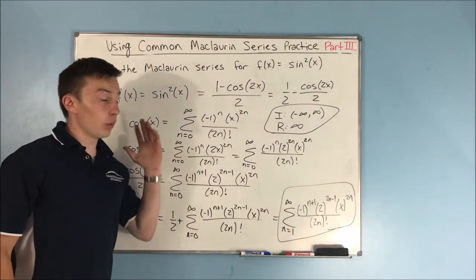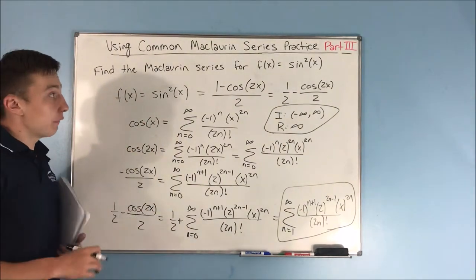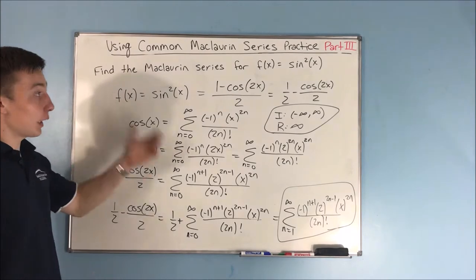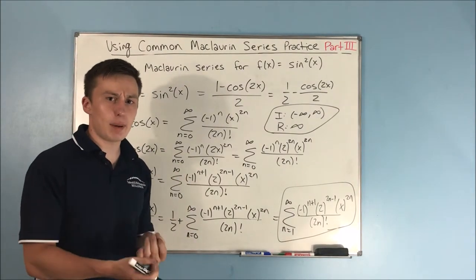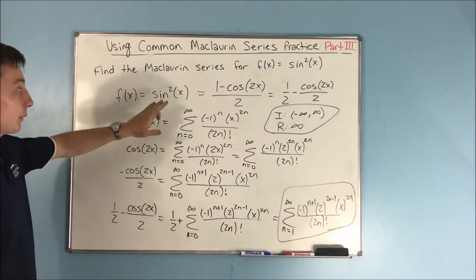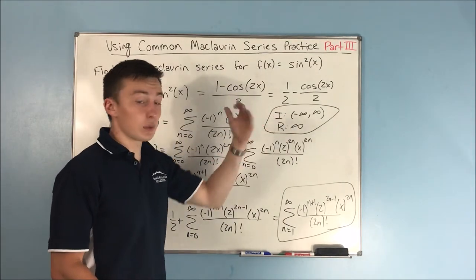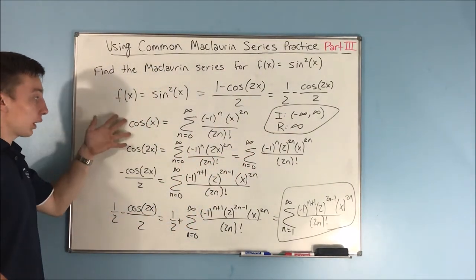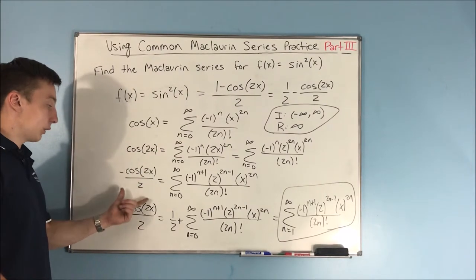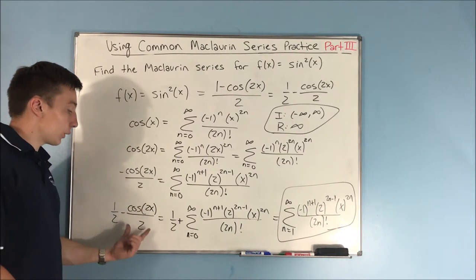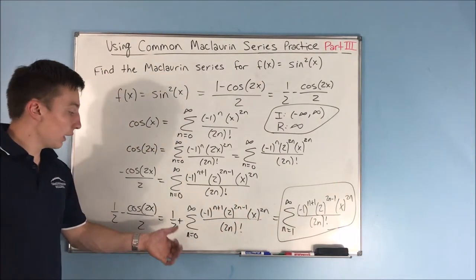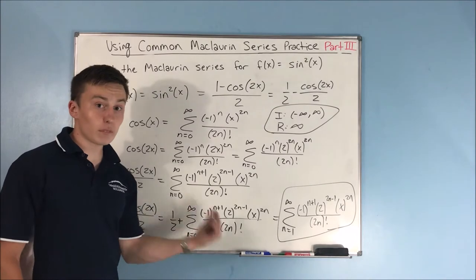To give an overview of what we just did: we started with sine squared x and realized we can't use the sine of x power series because we can't square it. So we used the half angle identity to rewrite sine squared x as 1 half minus cosine of 2x over 2, then worked in steps — cosine x, cosine 2x, negative cosine 2x over 2, and finally 1 half minus cosine 2x over 2 — arriving at the series, but not before noticing the 1 half cancels with the first term.